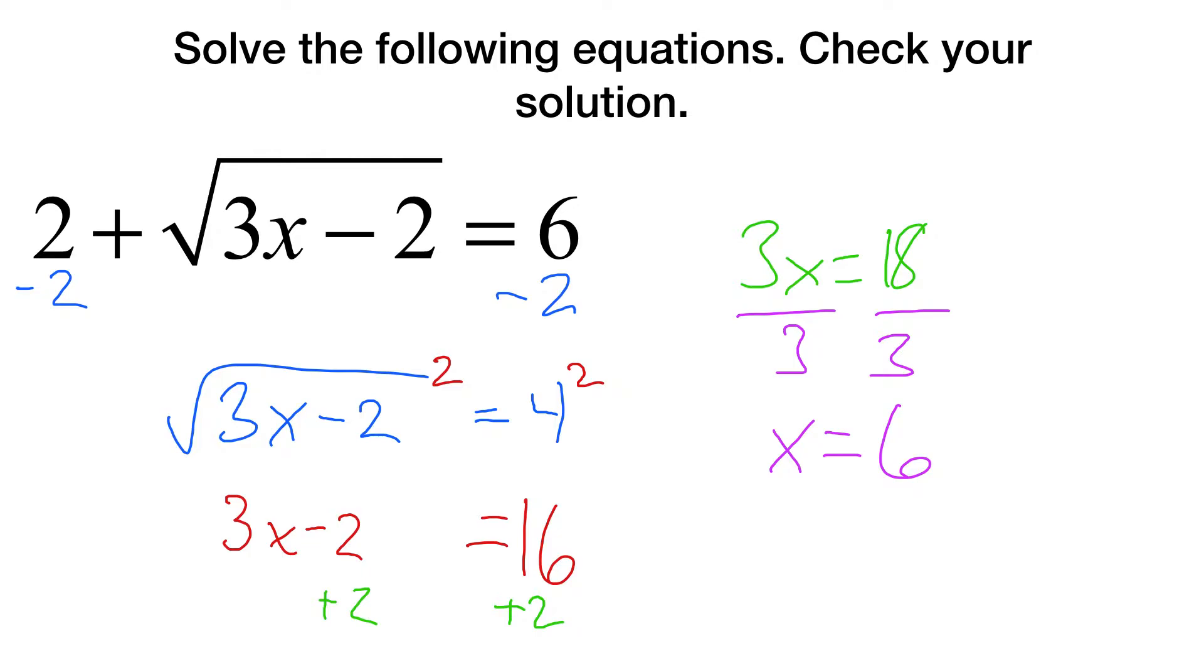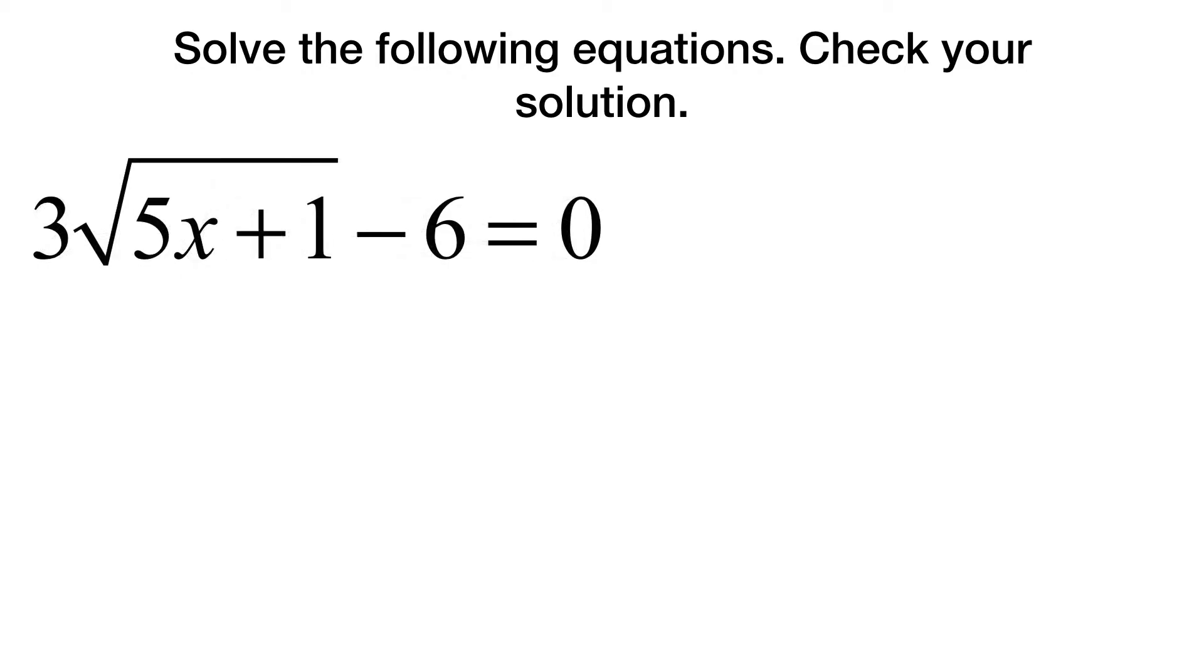So I'm going to try this one. 2 plus the square root of 3 times 6 is 18 minus 2, that's going to equal 6. So 2 plus the square root of 16 is 6. That's 2 plus 4, so yes, that one works.